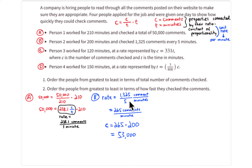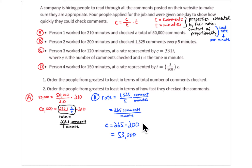For applicant B, it's 1,325 comments in 5 minutes. Dividing by 5 gives 265 comments per minute. To find the total number of comments, multiply 265 comments per minute by 200 total minutes, which gives 53,000 comments. So applicant B checked 53,000 comments at 265 comments per minute.